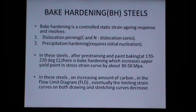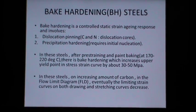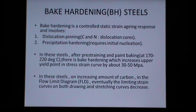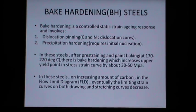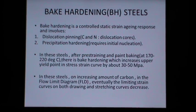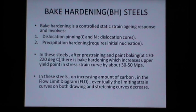We now move on to the bake hardening, that is the BH steels. Bake hardening involves a controlled static strain aging response, and it involves two phenomena. The first phenomenon is dislocation pinning, wherein carbon and nitrogen act as dislocation cores.